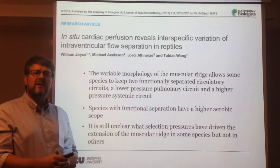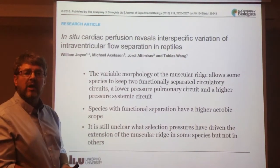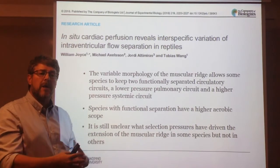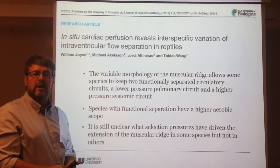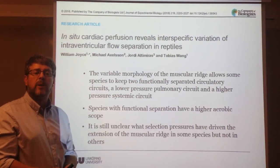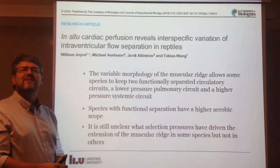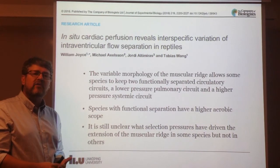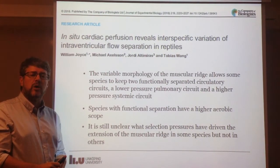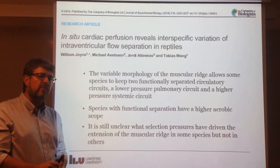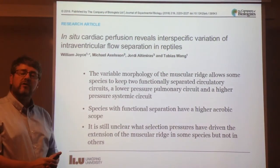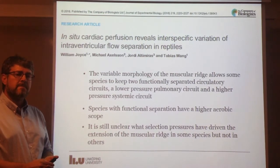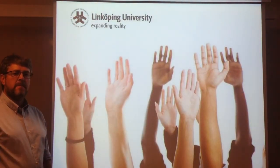The main conclusion is that it's the variable morphology of the muscular ridge that allows some species to maintain two functionally separated circulatory systems — a lower-pressure pulmonary circuit and a higher-pressure systemic circuit. Species with functional separation have a higher aerobic scope, meaning their capability to increase oxygen consumption is larger. Unfortunately, we don't know what they do with it — it's still unclear what selection pressures have driven the extension of the muscular ridge in some species but not others. We understand that varanid lizards use it for better running performance, but why it happens in Python species remains speculative and something we are still trying to understand. Thank you for listening.